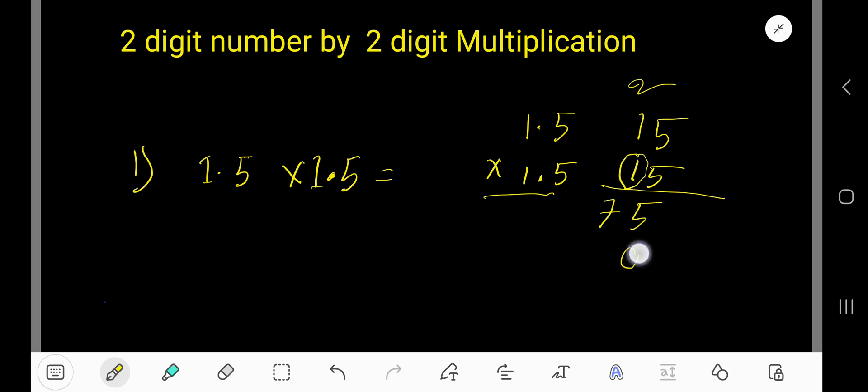Now start with this 1. 1 is in second column so first column will have zero as a placeholder. 1 times 5, 5. Then 1 times 1, 1. So just add: 5, 7 plus 5, 12. Write 2, carry 1 to the next column. 1 plus 1, 2.